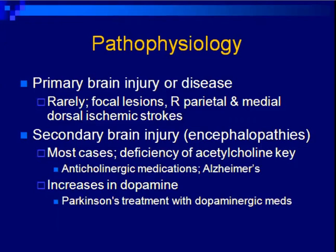Regarding pathophysiology: primary brain injury or disease is not the most common presenting factor, but it can be. Secondary brain injury, otherwise known as encephalopathies, are frequent causes. It is felt to be related to deficiencies of acetylcholine in the brain and neurotransmitters. There are a number of anticholinergic medications that precipitate this, so that is a class of medications to be aware of. Increases in dopamine are also felt in some studies to be contributing risk factors.